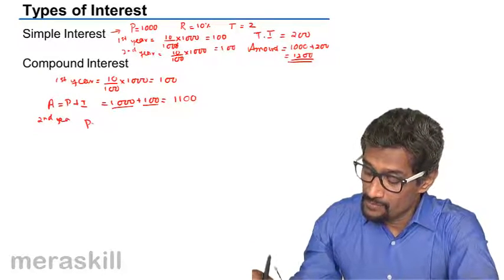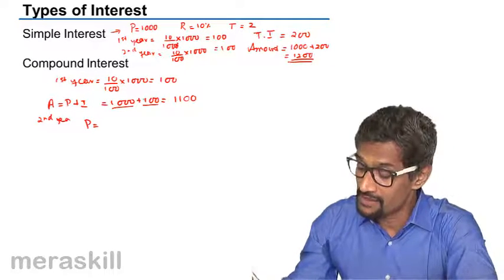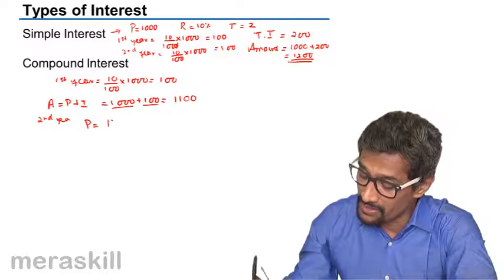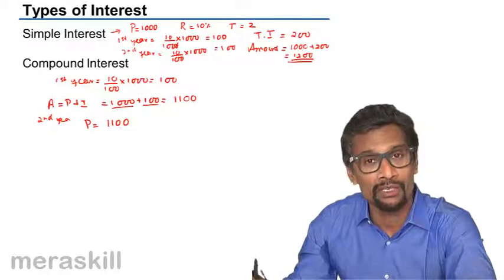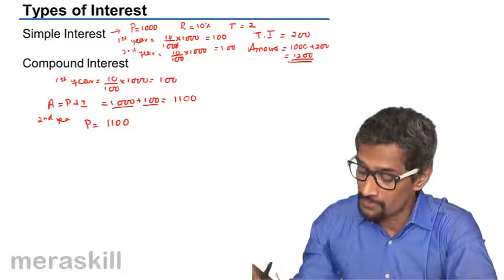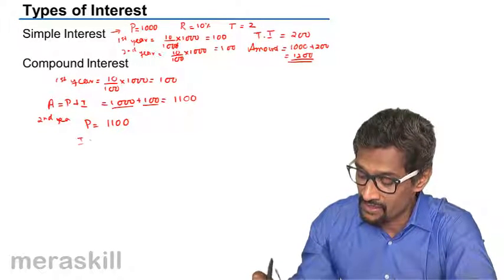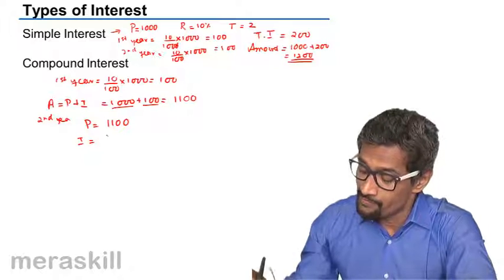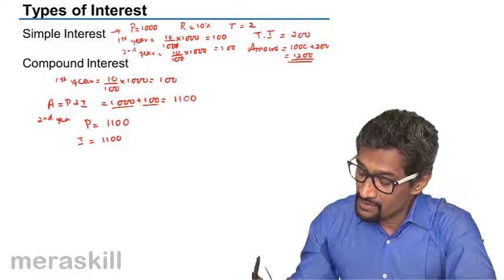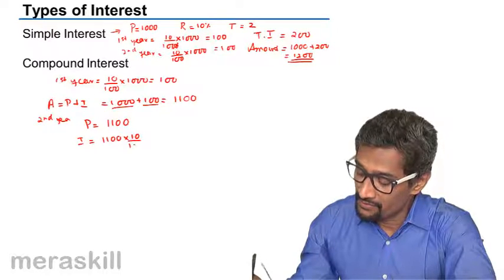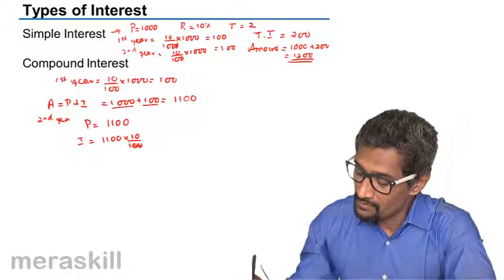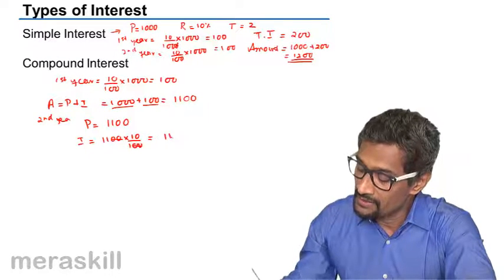So for the second year, principal will not be 1000 as in simple interest. Here it is going to be 1100. The amount at the end of first year becomes the principal for the next year, so in that case the interest is going to be 10% of this 1100, which is going to be 110.